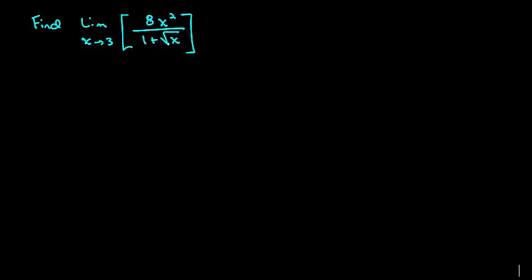First, if we plug 3 into this function, so the function evaluated at 3 is 8 times 3² over 1 plus the square root of 3. And so this becomes 8 times 9 over 1 plus the square root of 3, which is 72 over 1 plus the square root of 3.